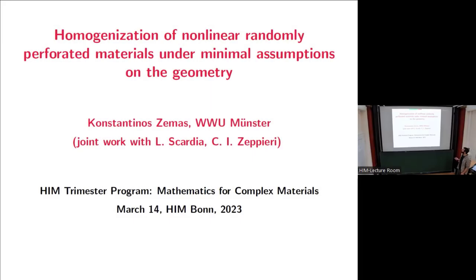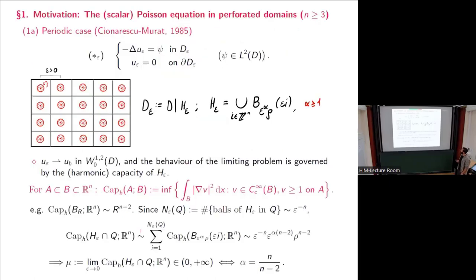Today I'd like to talk about the joint work with Lucio Scalvi and Katerina Zepieri that is about to be online soon, about the stochastic homogenization and variational framework. Before going to that, I'd like to start with a classical example of such a result in the periodic case at the PDE level, which is this famous result by Cioranescu and Murat.